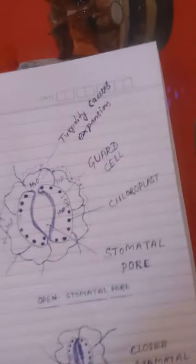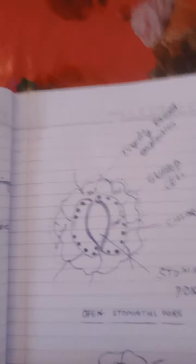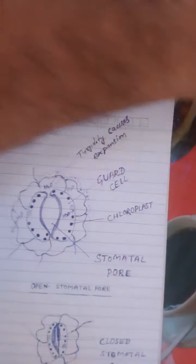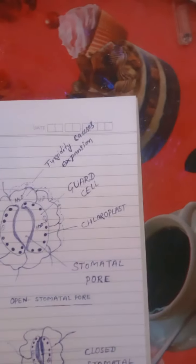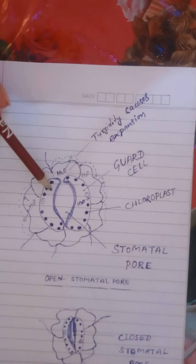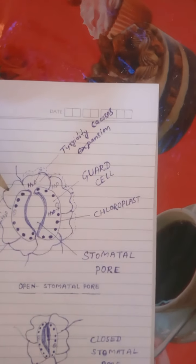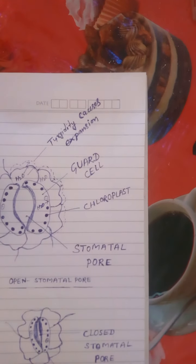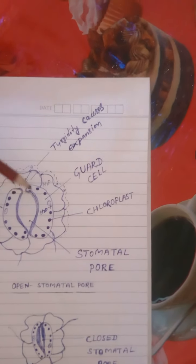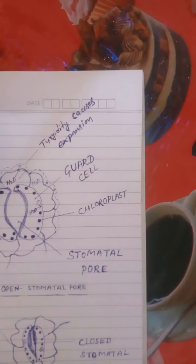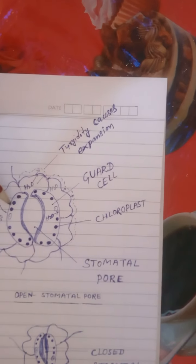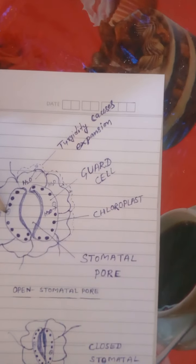I have drawn the figure of a stomata to show you what the figure of a stomata looks like. You have to know that this is the guard cell, this is the subsidiary cell, and the darkly dotted part is the chloroplast, and this is the nucleus of the guard cell.